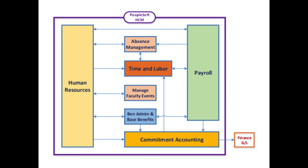The arrows illustrate how the data interacts with the other modules—which modules are impacted by data that comes from one source. HR has an impact on every part of the system because everybody needs the employees that HR generates. Absence management feeds into HR. HR feeds into commitment accounting, benefits admin, and time and labor. There's a relationship between time and labor and payroll where data goes back and forth. All your time transactions feed into payroll to be part of your paycheck. Once payroll is calculated and finalized, a fee goes to commitment accounting, and then there's an interface to the financial system that impacts the general ledger.